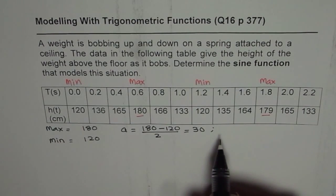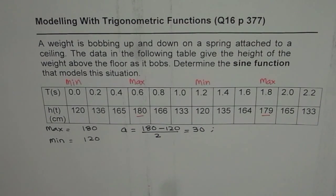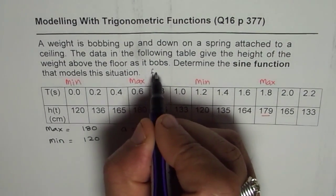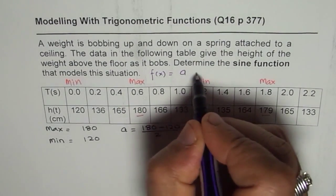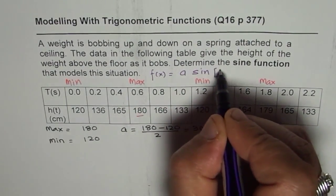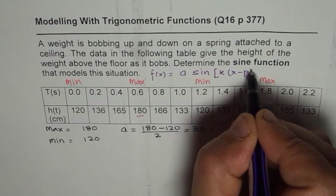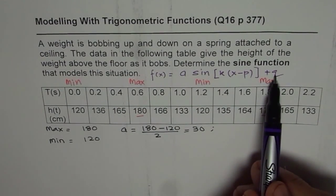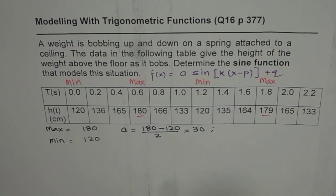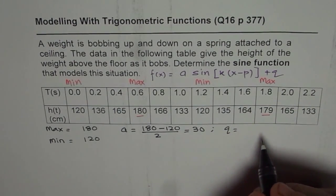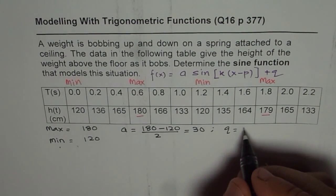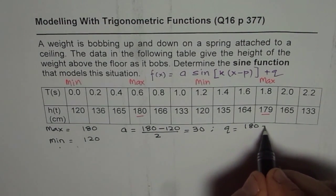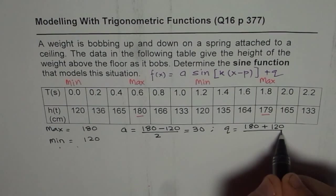The axis, so let me first write down the equation so that we know which parameters we are trying to fill in. So let me write sine function as f of x equals A times sine of K times x minus P plus Q. So we have already found A, now we will try to find Q, the axis. Axis is the average value, that means maximum plus minimum divided by 2. So maximum is 180, minimum is 120, we will add them up, maximum plus minimum divided by 2.